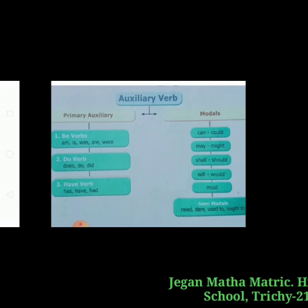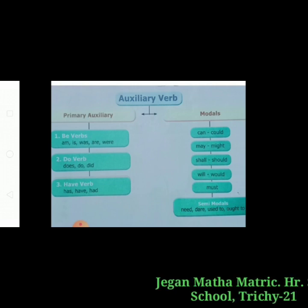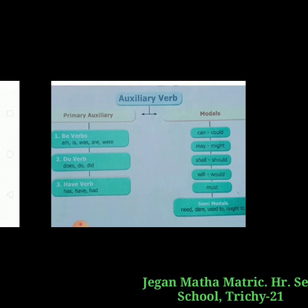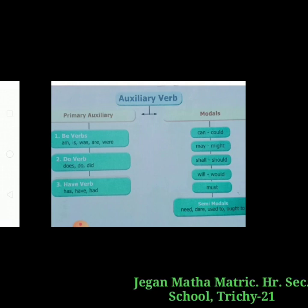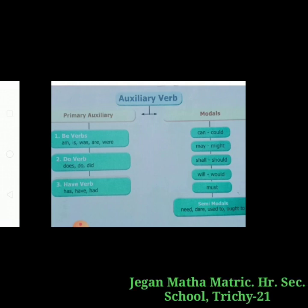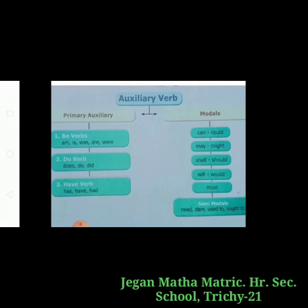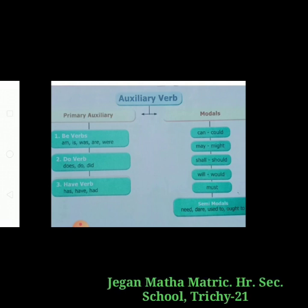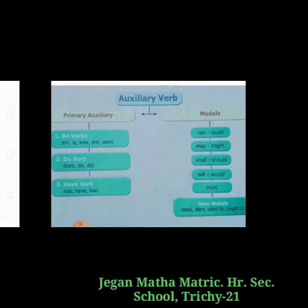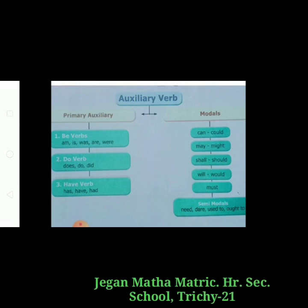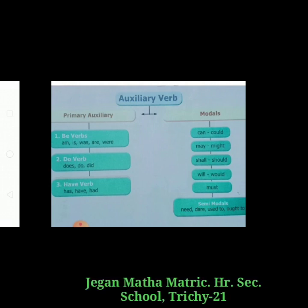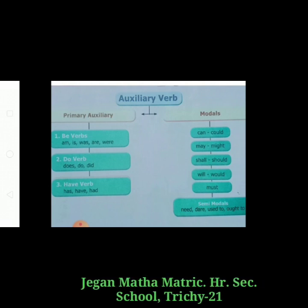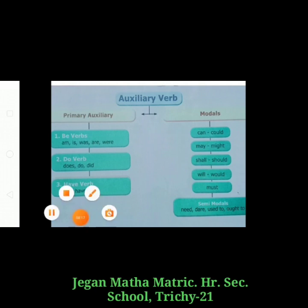Primary auxiliaries are the forms of the verbs to be, to have, and to do. Modal auxiliaries are: shall, should, will, would, can, could, may, might, dare, need, ought to, and used to. Modal auxiliaries are followed by the principal or main verb.